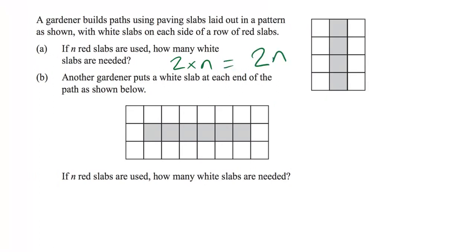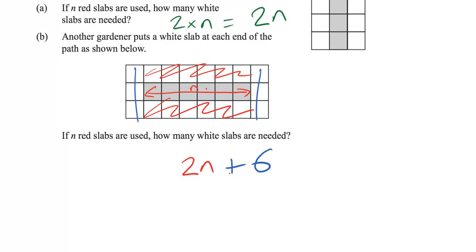Now, another gardener puts white slabs at the end of each of the paths, as shown. If N red slabs are used, how many white slabs are needed? Well, we already have a formula for some of this. Because of course, if we have N of these, these are the red slabs, we put N of those. Then all of these, well, that's going to be worth 2N. But if we have this pattern, we have to put 3 at the end and another 3 at the other end. So we're always going to have to write a plus 6 for whatever we do with the 2N. So our answer is 2N plus 6.